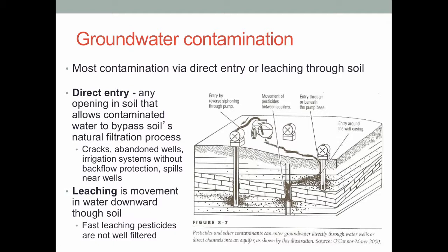Groundwater contamination tends to happen two major ways. The first is direct entry — accidental contamination through cracks, abandoned wells, or irrigation systems without backflow protection. Essentially any system in which chemicals are directly linked through a hole in the ground to the groundwater. For example, filling a pesticide tank with a leak that spreads and eventually feeds through a crack at the base of a well, following the pipe down to the groundwater.